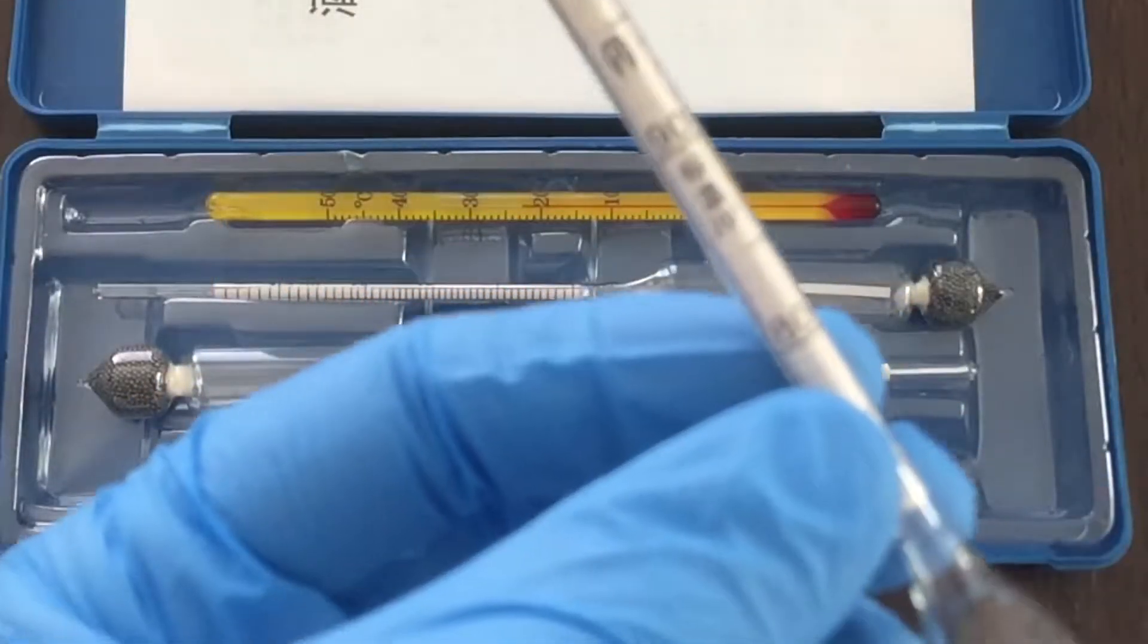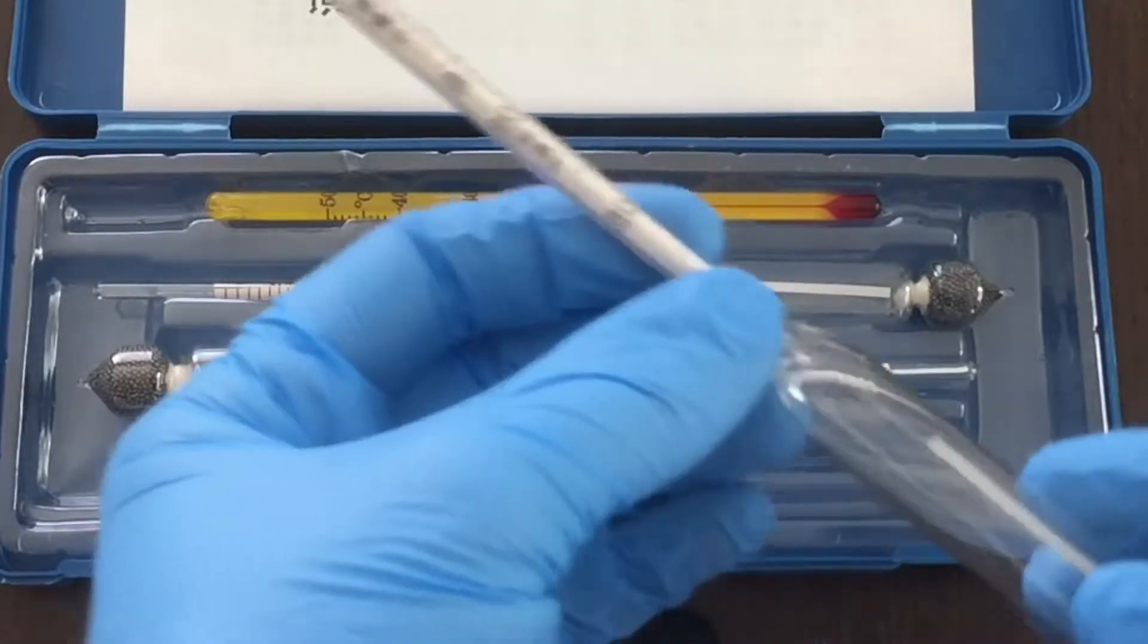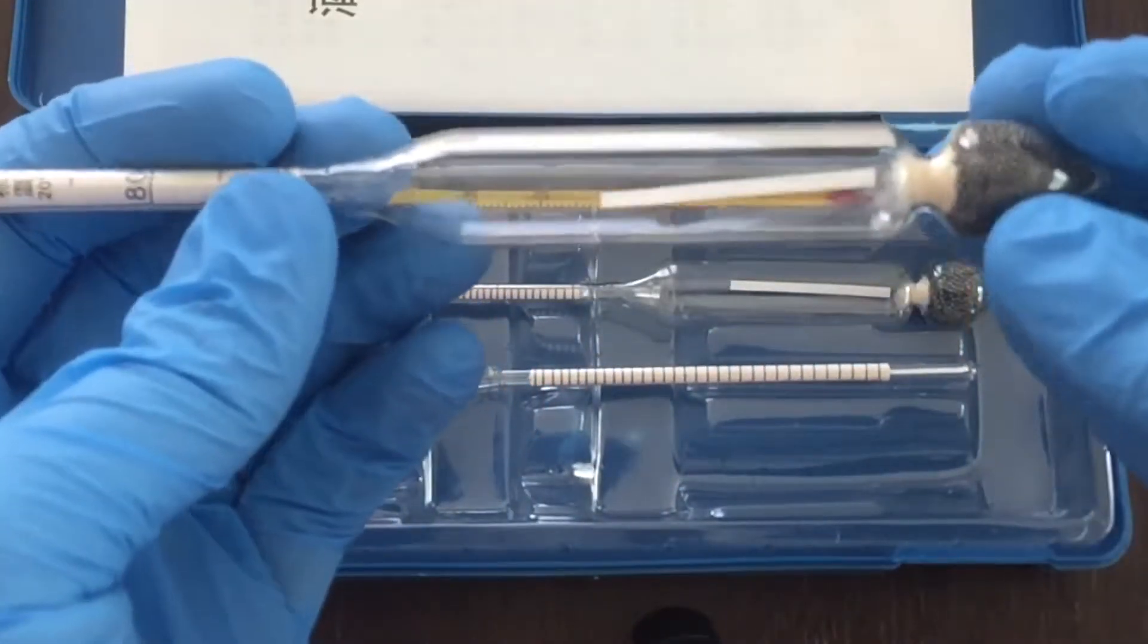For my sugar wash fermentation project I needed a way to measure the concentration of ethanol fermented and a hydrometer seemed the cheapest and simplest way to do this.